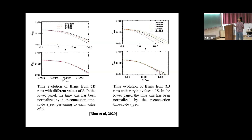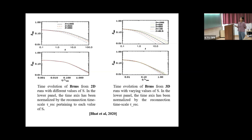Plotting B_RMS with time, the different colors denote the different Lundquist numbers for simulations at different Lundquist numbers — this is for 2D and this is for 3D. On normalizing the time axis with the reconnection timescale, the B_RMS curves at different Lundquist numbers collapse onto each other. The collapse is very smooth for the 2D case. Although not as smooth for the 3D case, the distance between two B_RMS curves at successively higher Lundquist numbers decreases. These results indicate that the reconnection timescale is the dynamical timescale for non-helical MHD decaying turbulence.